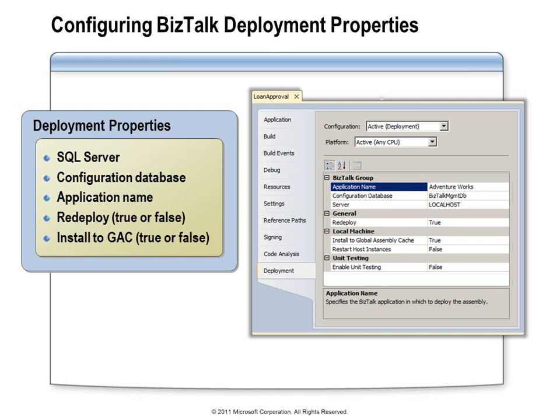You can also see a property named redeploy. If you set that to true, when Visual Studio deploys this assembly but finds that this assembly already exists in the BizTalk runtime, it will attempt to query the BizTalk management database for any configuration settings that are associated with this assembly, such as the send and receive ports associated with an orchestration. It will retain a copy of those settings, then remove the existing assembly from the BizTalk runtime, deploy your new assembly, and then restore those configuration settings back to the BizTalk management database. If you set the redeploy property to false, you'll need to perform the equivalent of that process by some other means.